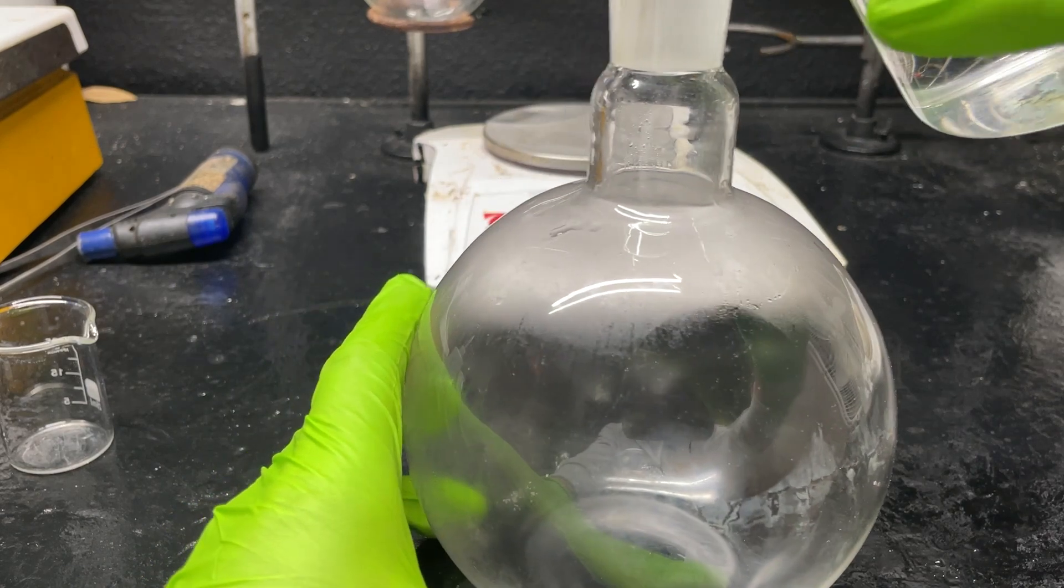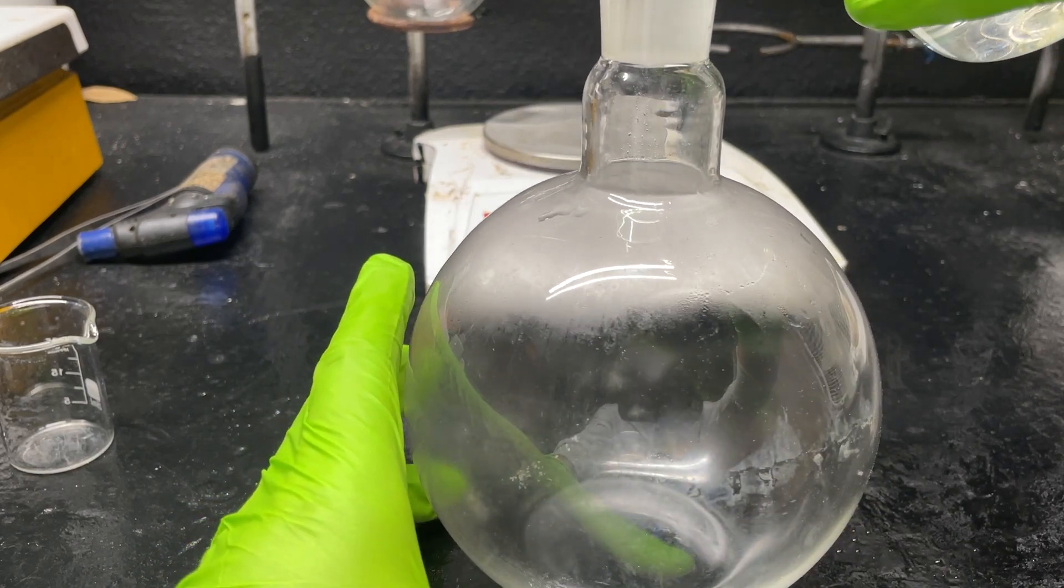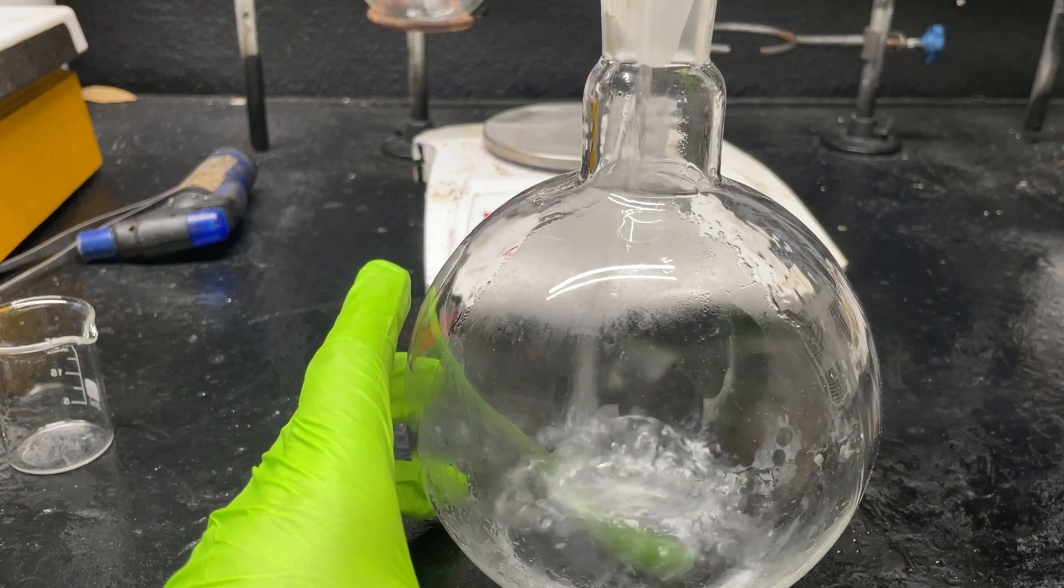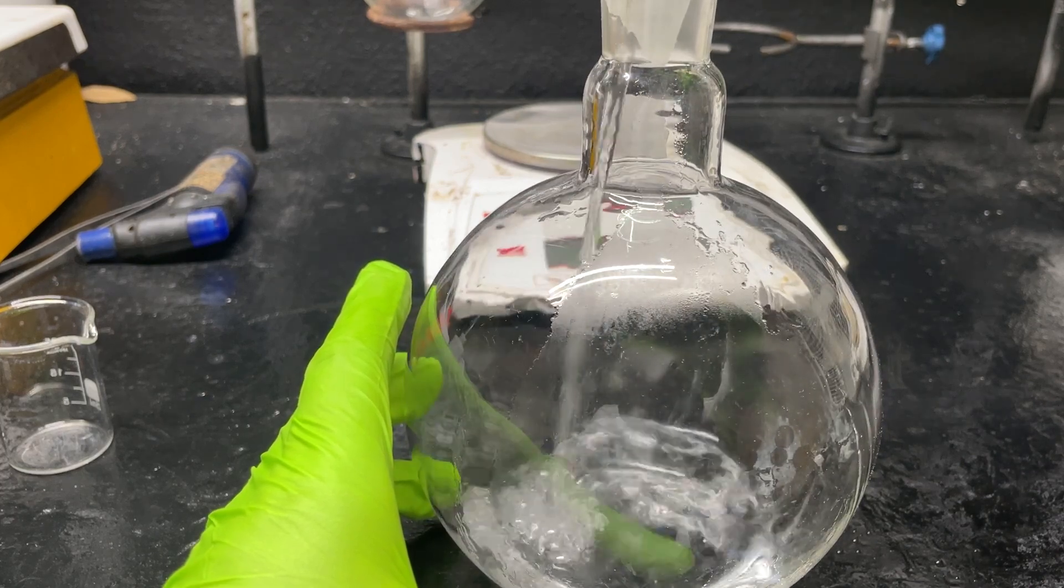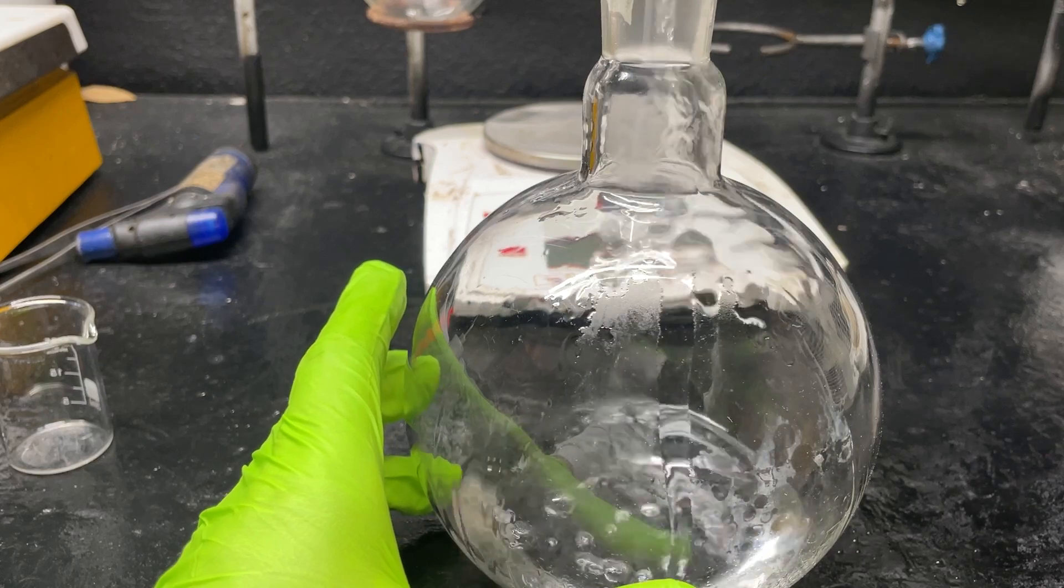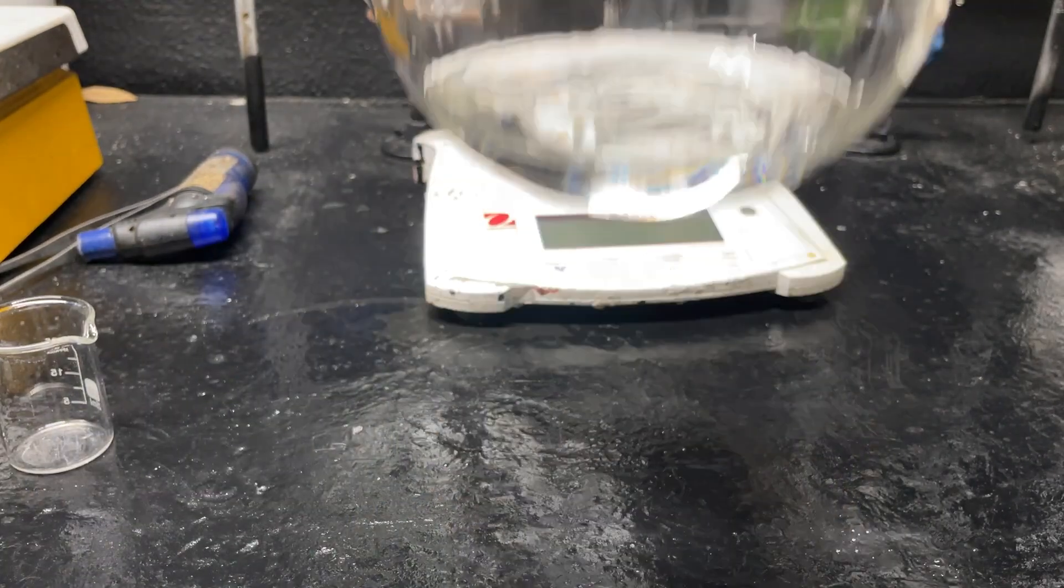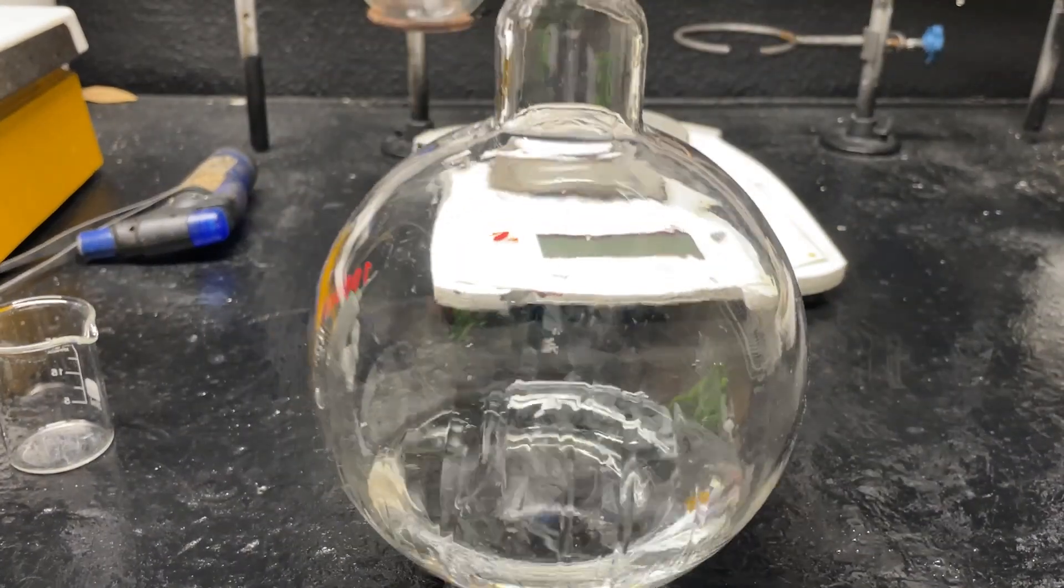Let's go ahead and add in 100 milliliters of our pure acetic acid into this thousand milliliter round bottom flask. It's actually kind of a flat bottom round bottom - you see the bottom of it's flat, so I don't know what you even call that.